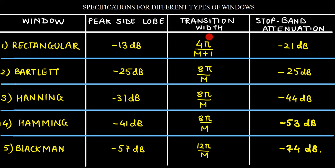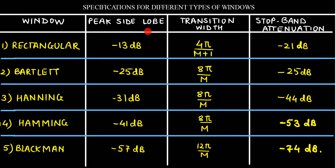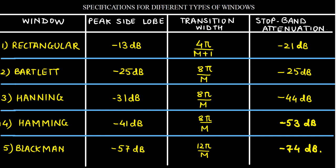If we observe the transition widths, we can see that the rectangular window has the minimum transition width, but its peak side lobe and stop band attenuation are quite poor compared to other windows. The best peak side lobe and stop band attenuation values are given by the Blackman window at −57 dB and −74 dB respectively. However, its transition width of 12π/M is quite higher. So there is a trade-off: if we want better peak side lobes and stop band attenuation, we get a larger transition width. If one specification is better, we need to compromise on another.